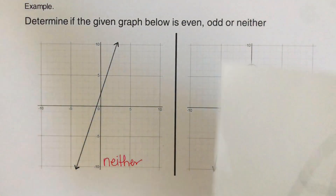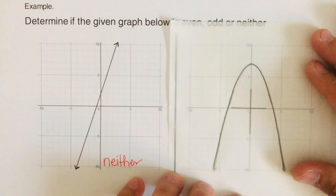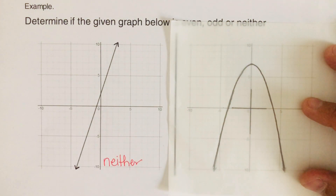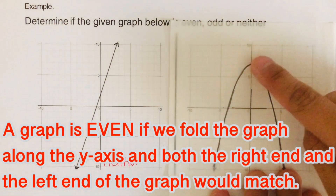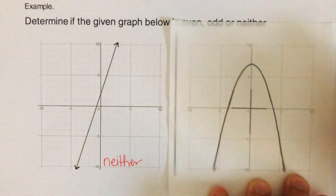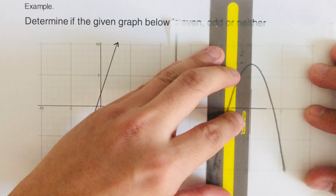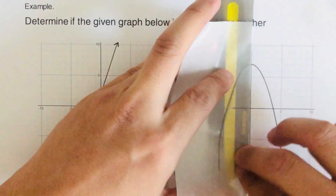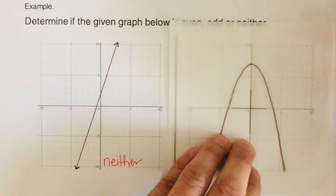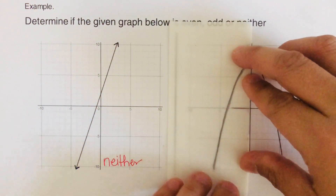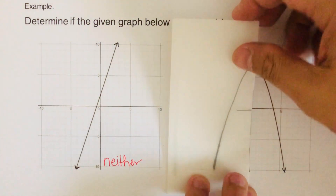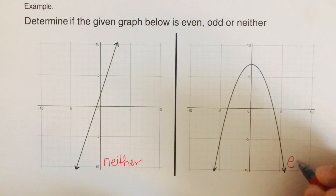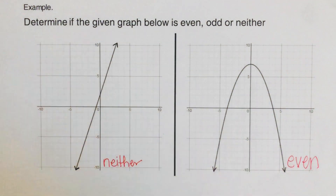Now let's test this next graph. I've drawn it on patty paper. Our first test is for even: fold the graph along the y-axis and see if both the right end and the left end match up. Once we fold it along the y-axis, they are a match — the left end and the right end of the graph match up. That means this graph is even. Since it's even, it cannot be odd or neither.